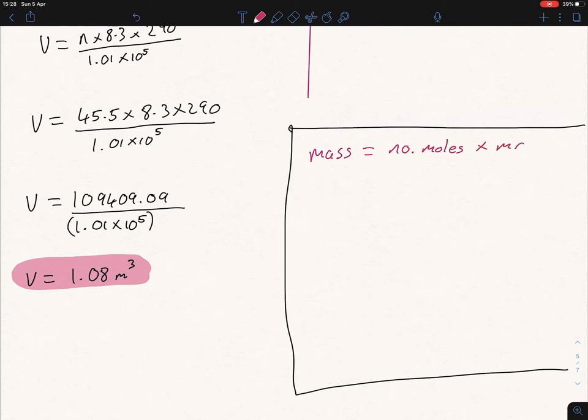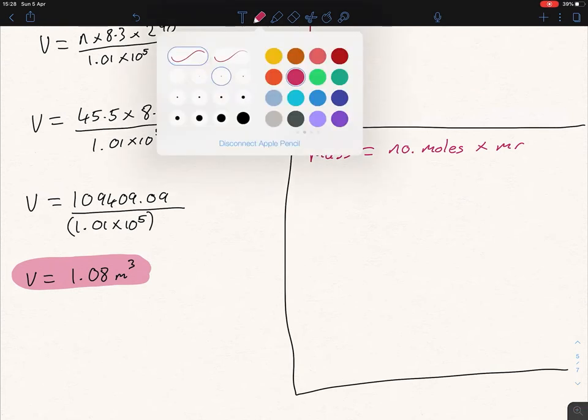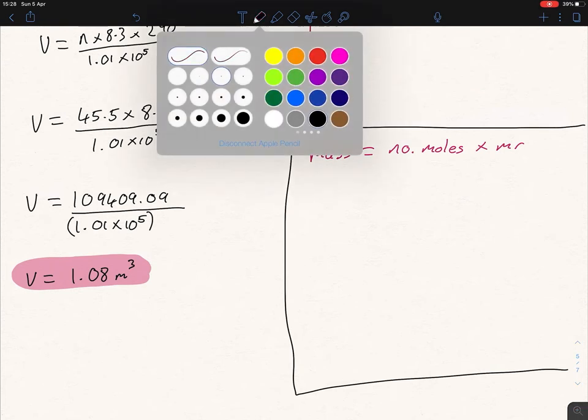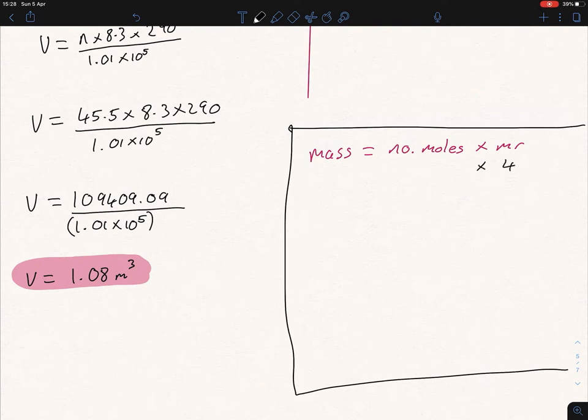Your mass equals the number of moles times Mr. If you go to your periodic table for helium, the Mr for helium is 4, so we put in that 4.